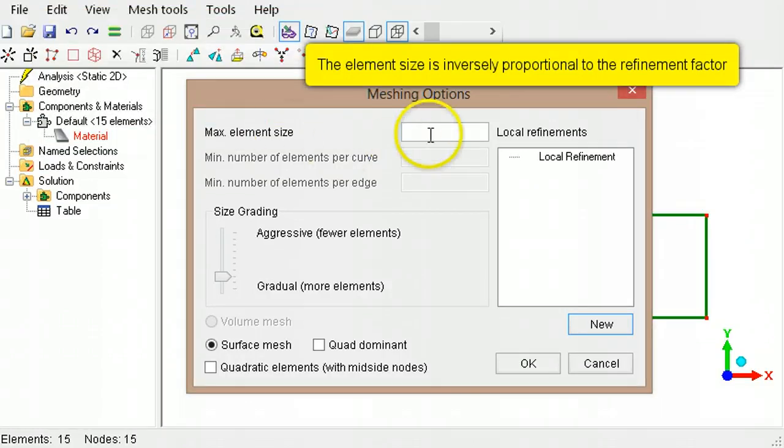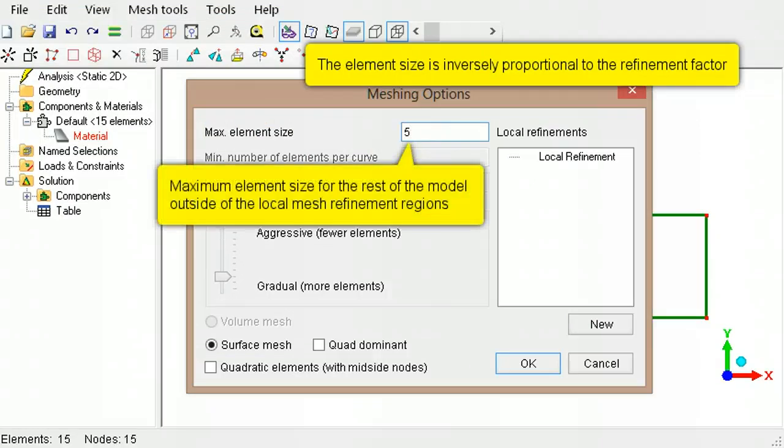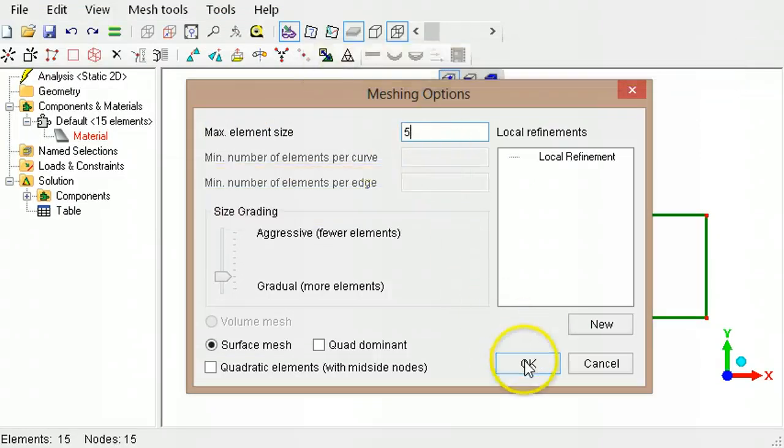The element size is inversely proportional to the refinement factor. So the larger the refinement factor, the smaller will be the elements.